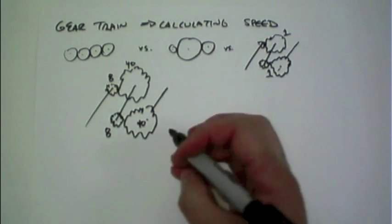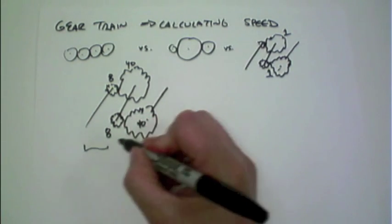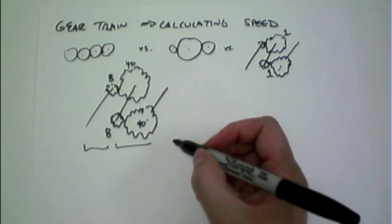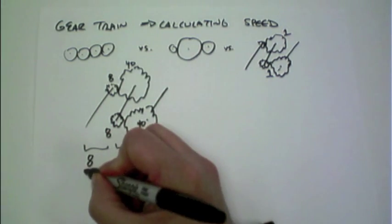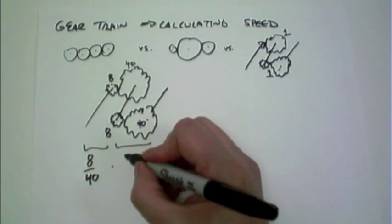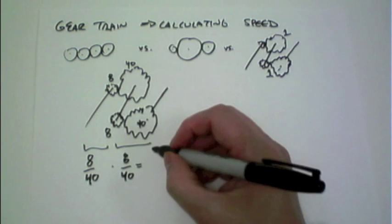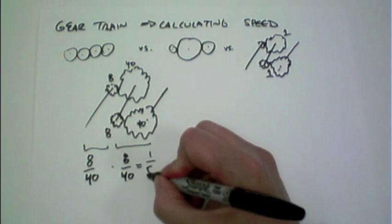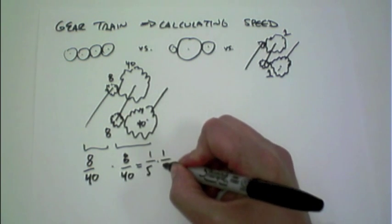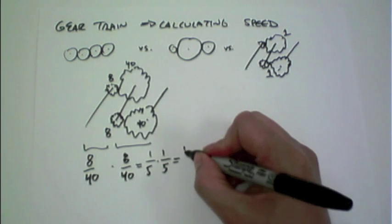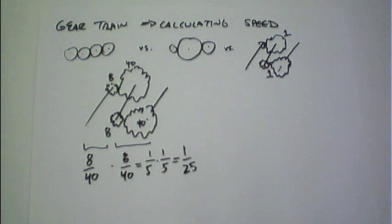So, what does the math look like here? Well, we do the exact same sort of ratios between the two. In the back, it's an 8-to-40. And in the front, it's also an 8-to-40. If we multiply these out, we can actually first reduce them down into two 1-by-5s, which then indicates that it's a 1-to-25 ratio.